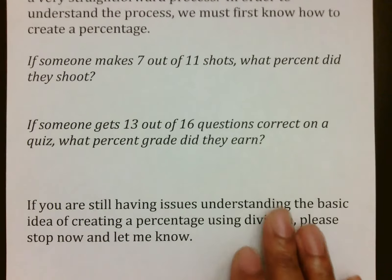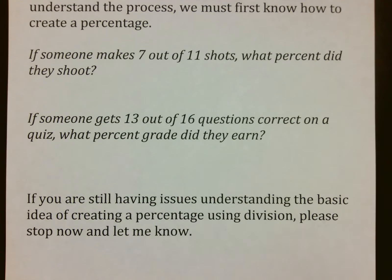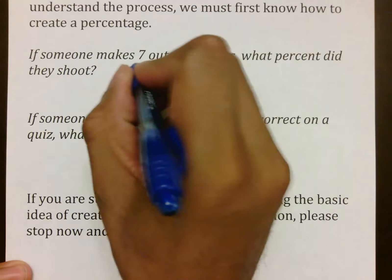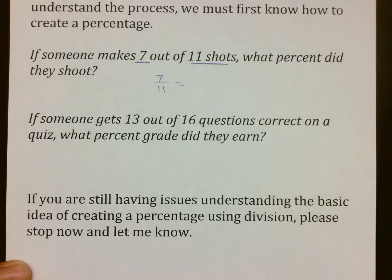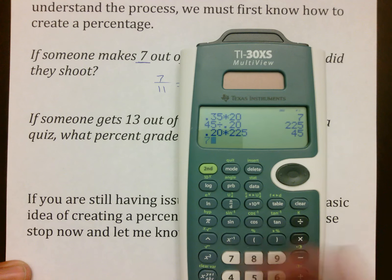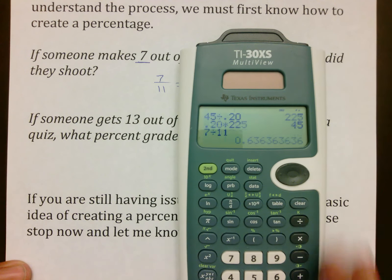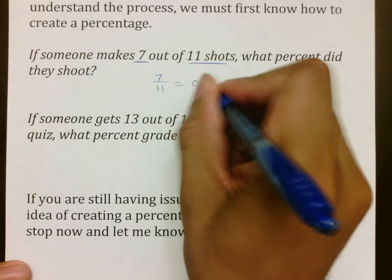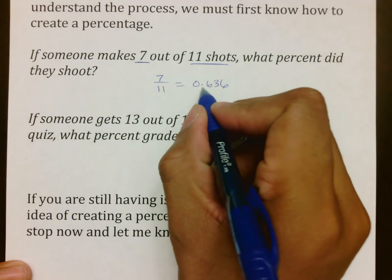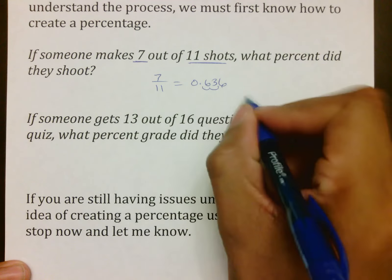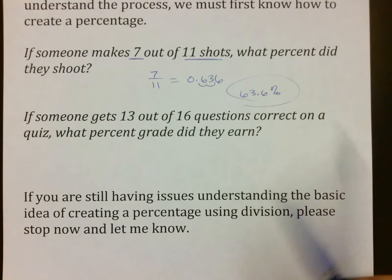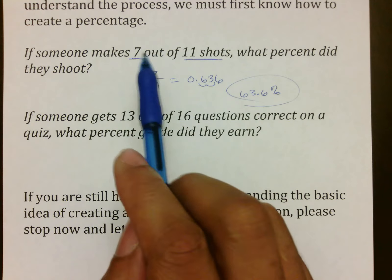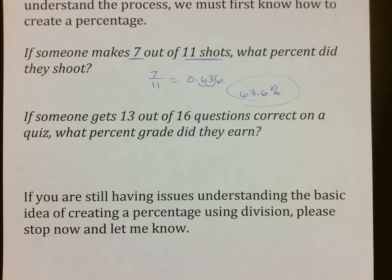Let's look at a couple of examples. If someone makes seven of eleven shots and you want to know what percent they shot, you put how many they made over the total. You simply do seven divided by eleven to get 0.636. To convert this into a percentage, move the decimal two spots — that gives you 63.6%. To find a percent, take the success number divided by the total number.